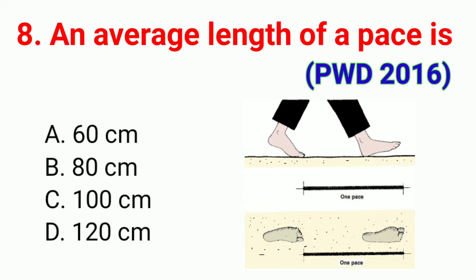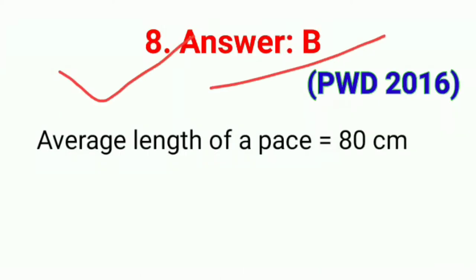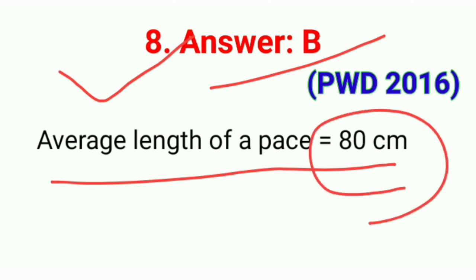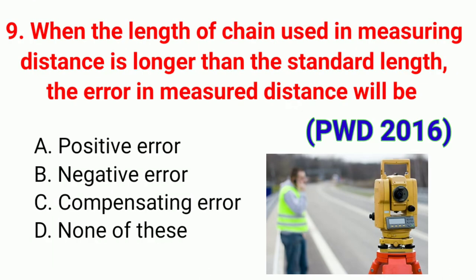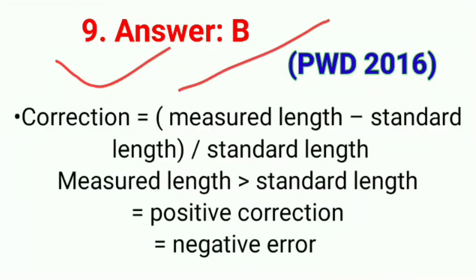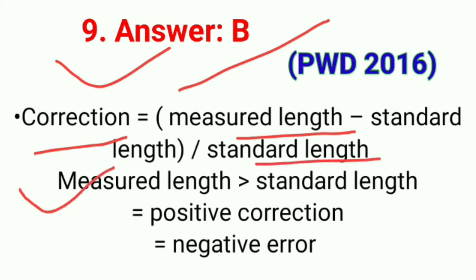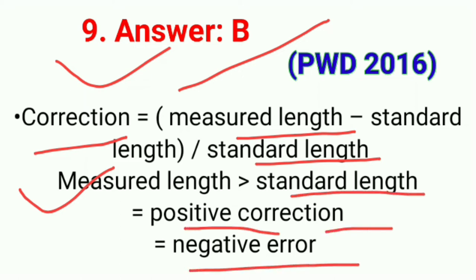Question number eight: The average length of a pace is. The correct answer is option B, 80 cm. Question number nine: When the length of chain used in measuring distance is longer than the standard length, the error in measured distance will be. The correct answer is option B, negative error. The correction formula is: correction = (measured length − standard length) / standard length. When measured length is greater, correction is positive and error is negative.